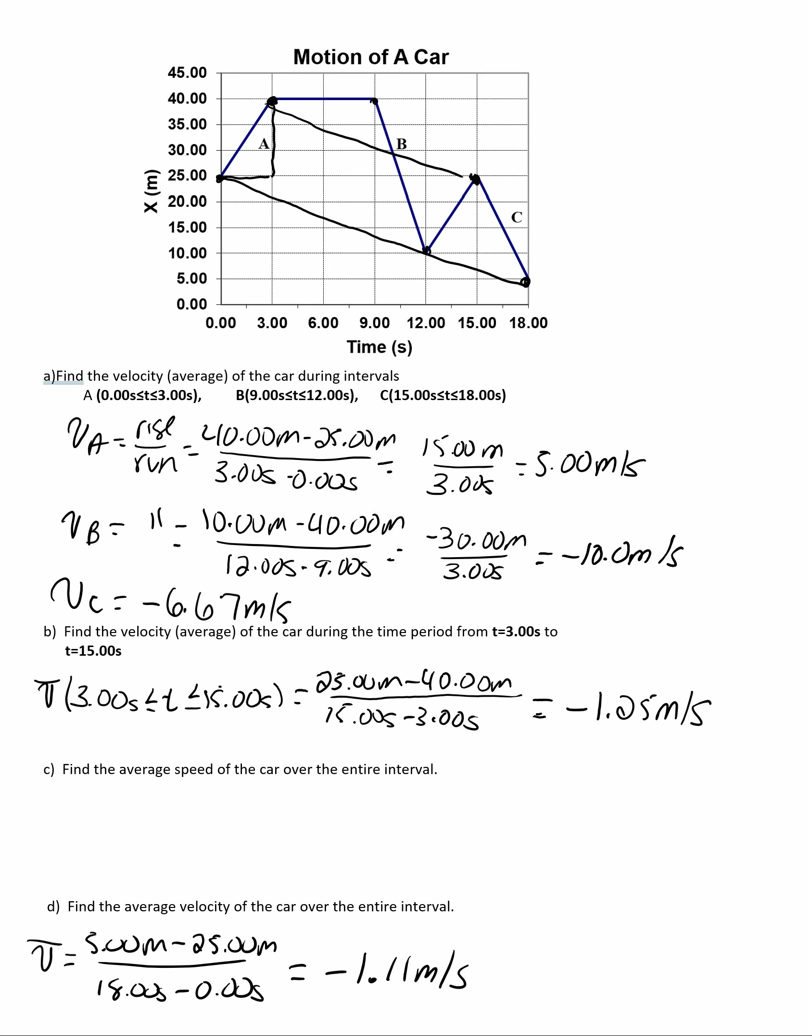Now, back to Part C. Average speed is not the slope of anything. To find average speed, we have to go back to the definition, which is average speed equals distance over time.